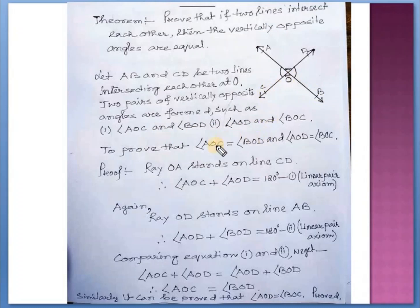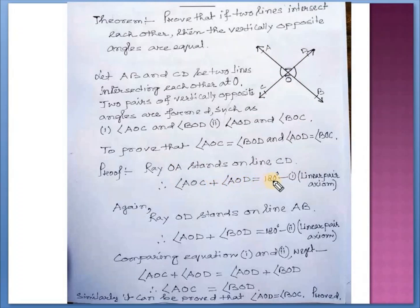To prove: angle AOC equals angle BOD, and angle AOD equals angle BOC. Proof: ray OA stands on line CD. Therefore, angle AOC plus angle AOD equals 180 degrees — this is equation number 1, by the linear pair axiom — because the sum of these two angles equals 180 degrees.